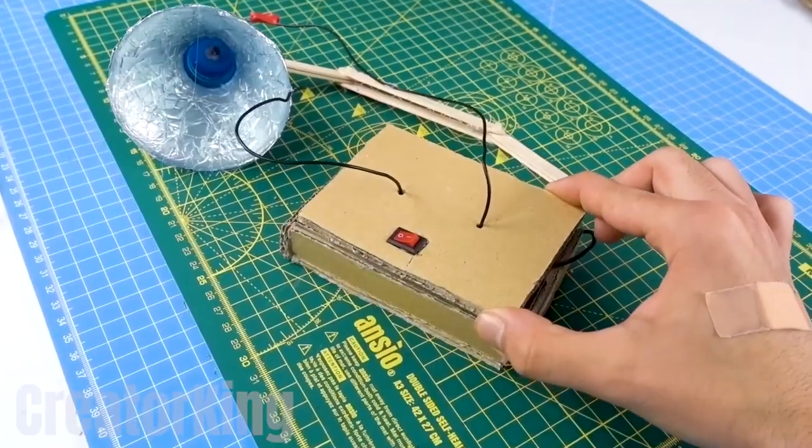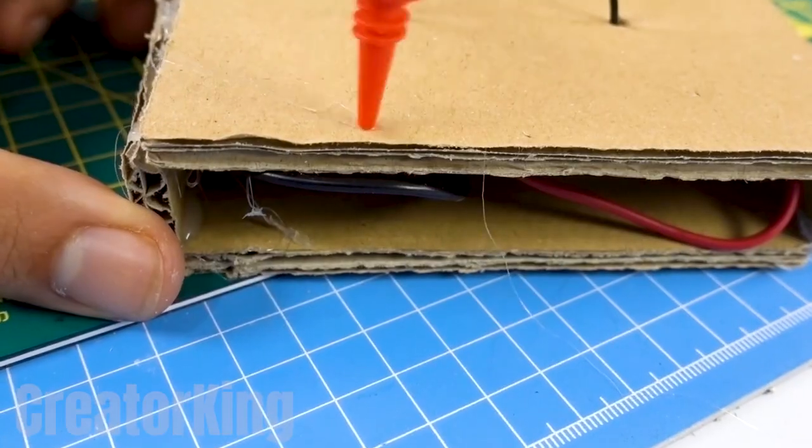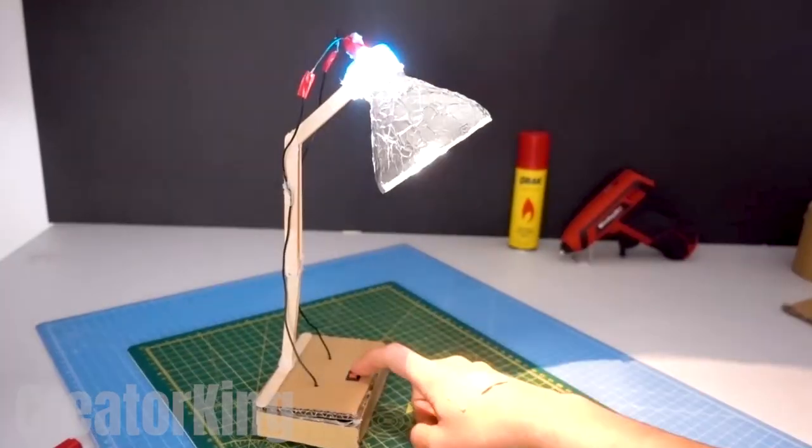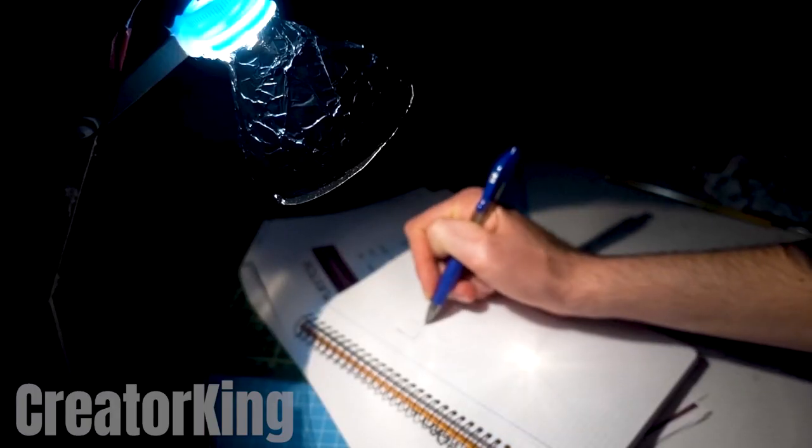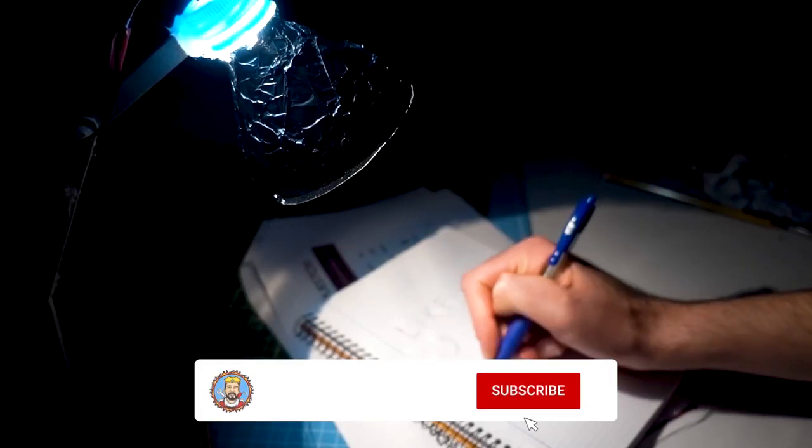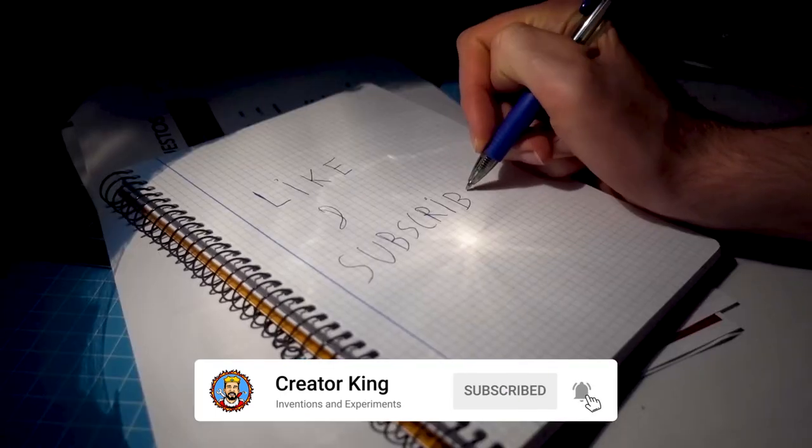Apply glue to the last popsicle stick, join it to the arm, then glue everything to the base. We are done! Don't thank me for illuminating even your darkest nights. It's also the perfect companion to keep you up at night during final exams. I know, it's hard. We're all with you. And don't forget to subscribe!